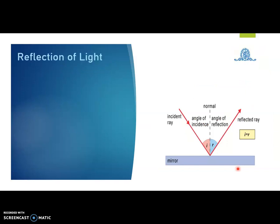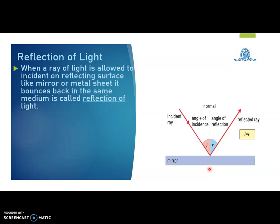Now let us see reflection of light. This ray diagram shows reflection of light. This is the mirror surface. If a ray of light is incident on this mirror surface, that is the reflecting surface, then it bounces back in the same medium, and this phenomenon is called reflection of light. When a ray of light falls on a reflecting surface like a mirror or metal sheet, then it bouncing back in the same medium is called reflection of light.